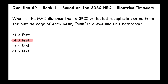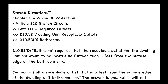First, we ask ourselves what article applies here. This falls under Article 210, which covers branch circuits, within Chapter 2: Wiring and Protection. We're looking at the part that tells us the maximum distance for a GFCI protected receptacle. There are actually two different sections in the code book involved in this question.